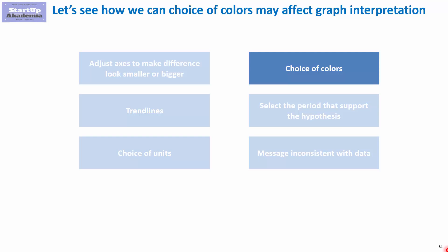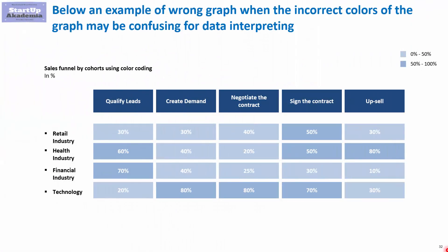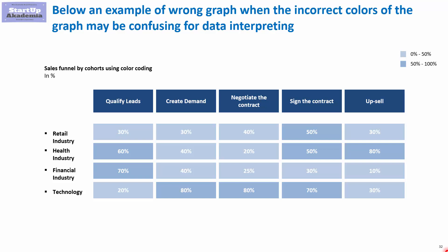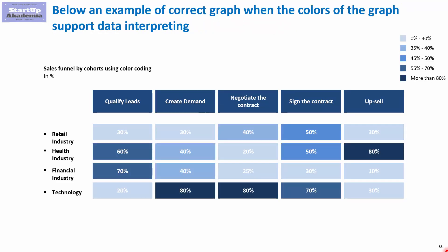Now let's have a look at the choice of colors. Here we will look at an example of funnels for different industries. When you look at the colors, there's hardly any difference between them, and this is due to the fact that we have created very wide intervals — so the differences between each industry don't look big. However, if we did it properly, it should look like this: with smaller intervals, the color coding actually tells you something. This is the wrong example where colors are used but don't mean anything, hiding certain differences. And this is the proper way — smaller intervals and bigger differences in the colors.